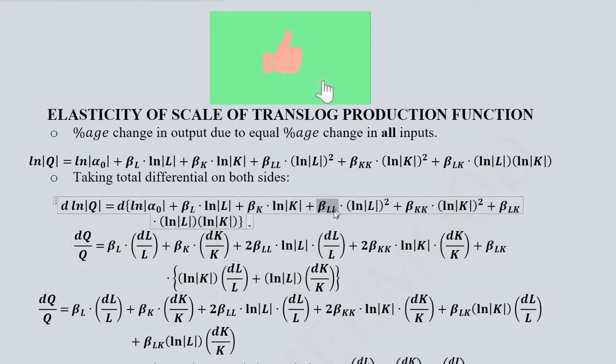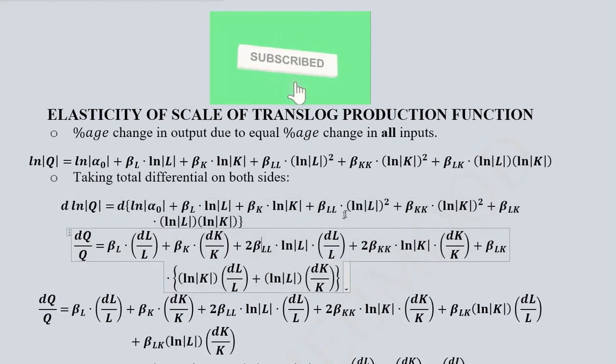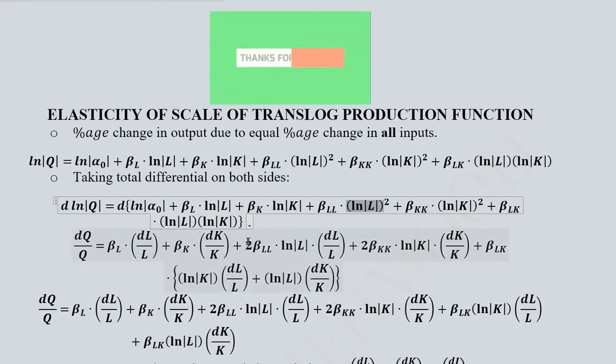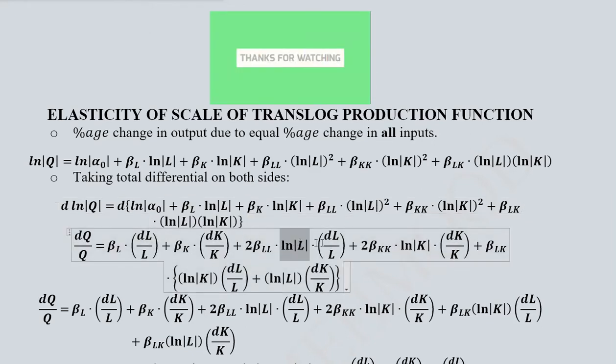And then we have βLL which will remain as it is but this natural log of L squared will give us 2 and then reduction of 1 in its power and then dL over L as a product of it.